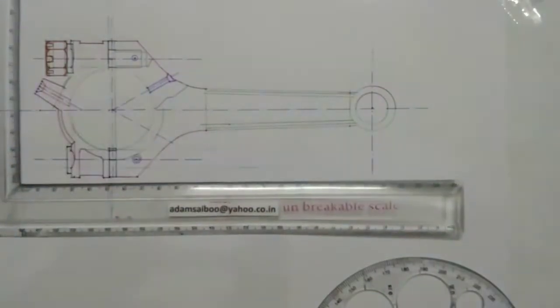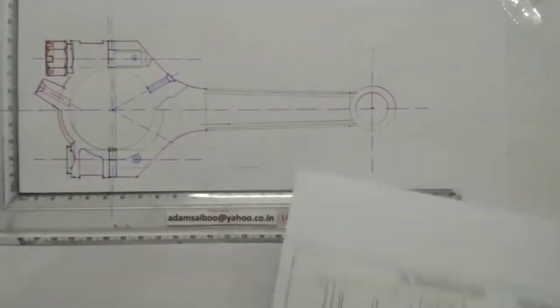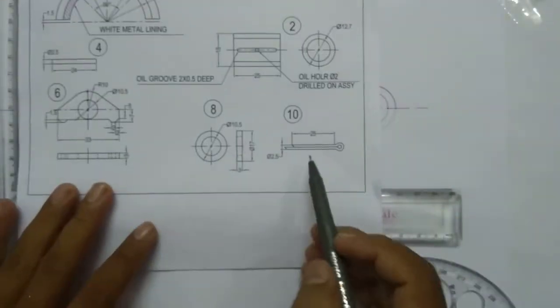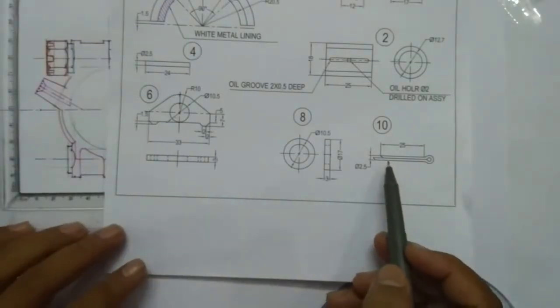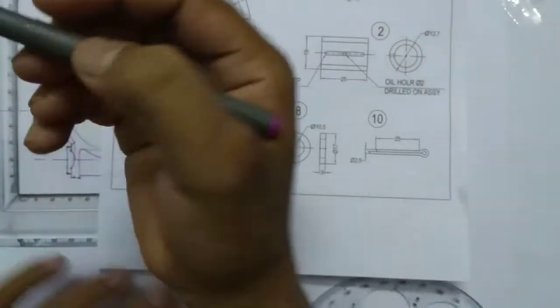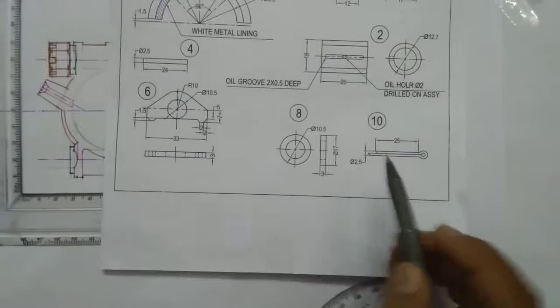In this slot we are going to insert the split pin, so I am going to insert this split pin from the back side. We have to bend here, the diameter is 2.5mm.